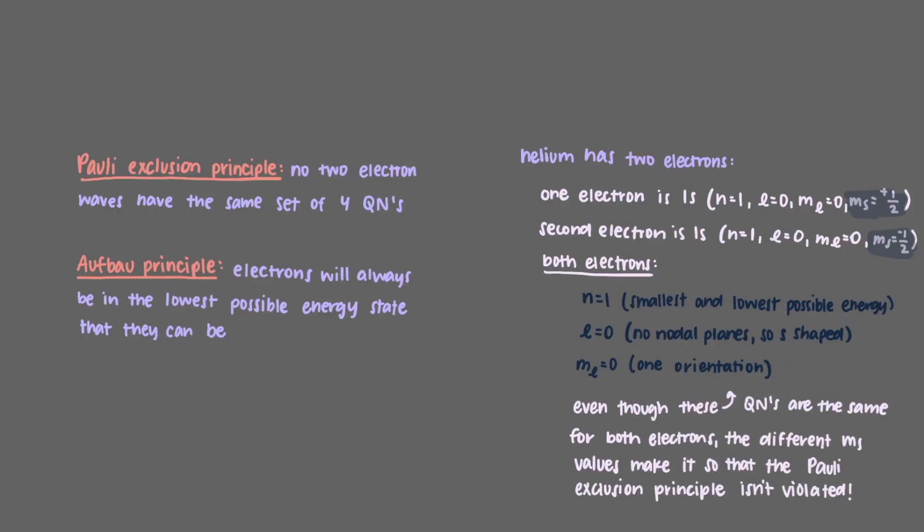The different m sub s values makes it so that, even though the first three quantum numbers are the same for both electrons, the Pauli exclusion principle is not violated and the two electrons have different sets of quantum numbers.